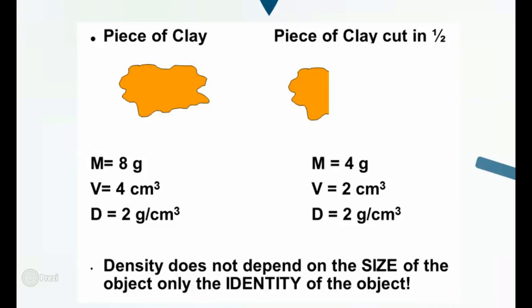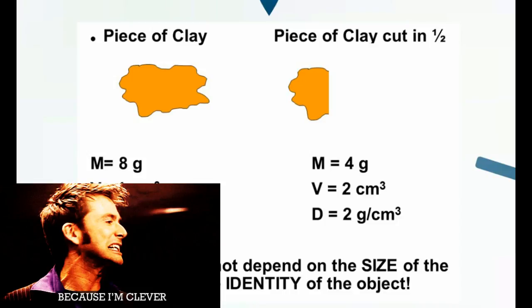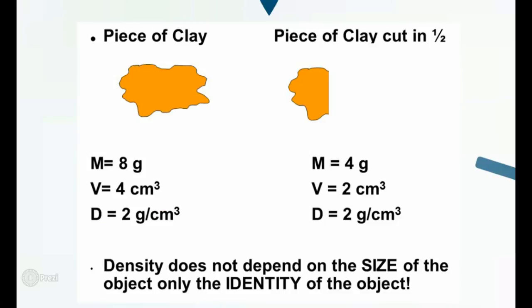So let's see how clever you are. A piece of clay. It has a mass of eight grams, a volume of four centimeters cubed or four milliliters. By the way, I don't think I mentioned this earlier. Centimeters cubed is the same thing as saying milliliters. So if you get sick of seeing centimeters cubed, change it to milliliters. That's what I did. So anyway, eight divided by four is what? Two. Okay. However, I chopped that piece of clay in half. I take, which means, therefore, I've half the mass. I've half the volume.